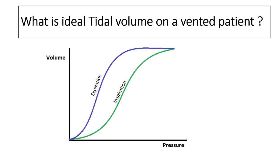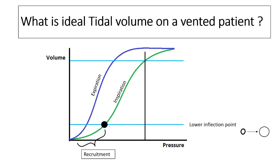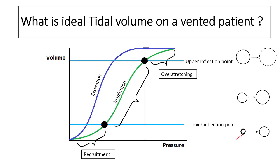To understand ideal tidal volume in a vented patient, we need to understand pressure-volume loops. When you inspire, the curve is typically not a straight line but an S-shaped curve. In the initial part up to the lower inflection point, there is recruitment of the alveoli. Once all alveoli are recruited, you see an almost straight relationship between pressure and volume.